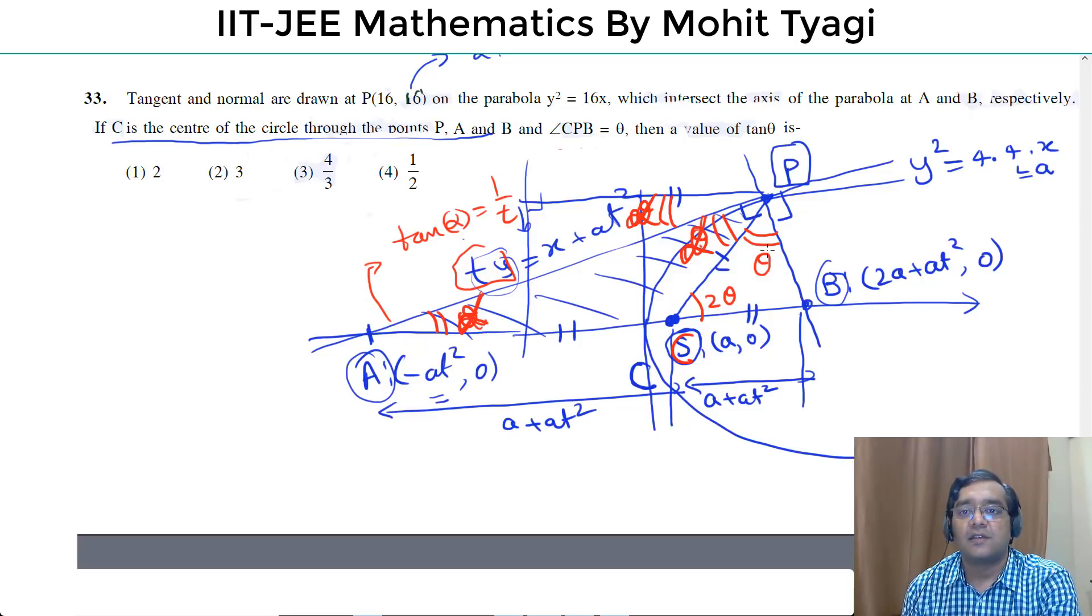Okay? Here, this is theta. Here, this is theta. We talked about it. 1 upon t. Take it. This angle 90 degree. Alpha and theta. From the other side. This is complementary.